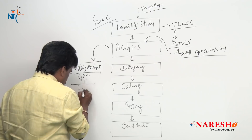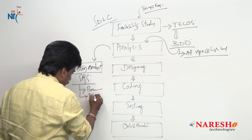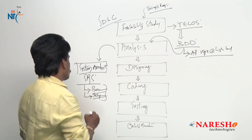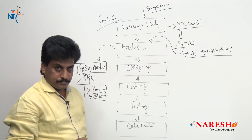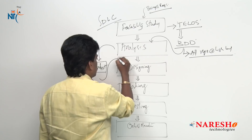In the analysis phase, the system analyst team works with the BDD as input. There are also technical requirements that exist here, so both business and technical requirements are available. This creates a crucial document in the entire project lifecycle — it contains business requirements along with related technical requirement solutions. This document is done by the system analyst team and serves as input to the designing phase.